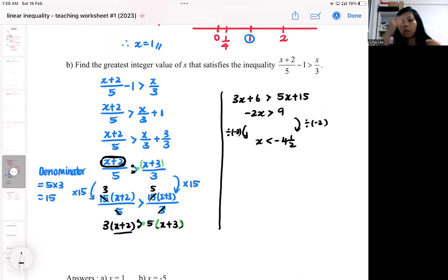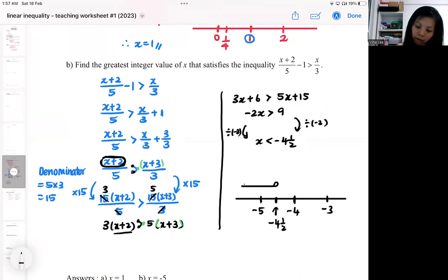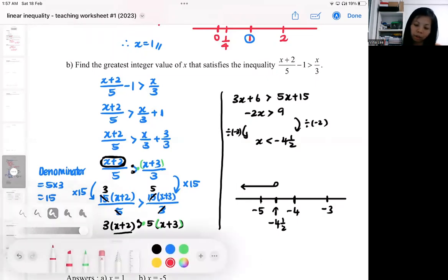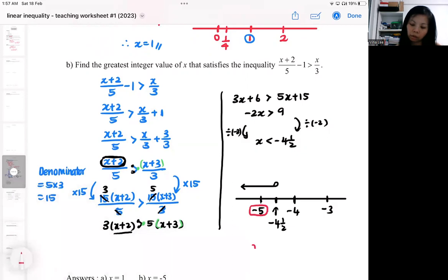Usually, when the inequality involves negative numbers, a lot of people will make mistakes. First of all, sometimes their number line is not even correct. Make sure you draw the correct number line. Make sure you know where is the correct negative number. Along the arrow, you will find the greatest integer. The greatest integer will be minus five.